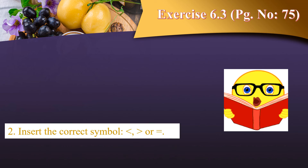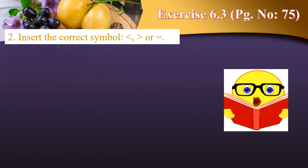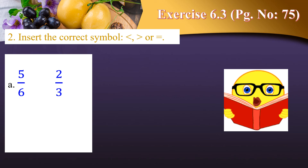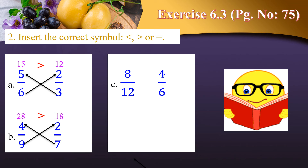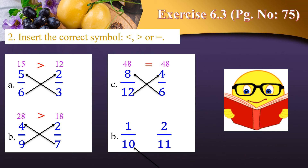Exercise 6.3, page number 75, Second question: Insert the correct symbols (greater than, less than, or equal to). (a) 5/6 and 2/3 — cross multiplication: 3×5=15 and 6×2=12, so 5/6 > 2/3. (b) 4/9 and 2/7 — 4×7=28 and 9×2=18, so 4/9 > 2/7. (c) 8/12 and 4/6 — 6×8=48 and 12×4=48, so 8/12 = 4/6. (d) 1/10 and 2/11 — 11×1=11 and 10×2=20, so 1/10 < 2/11.